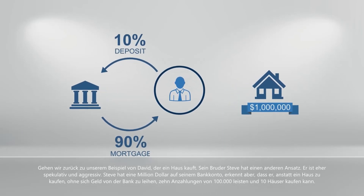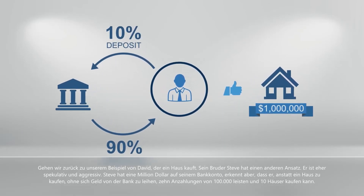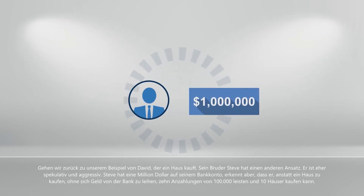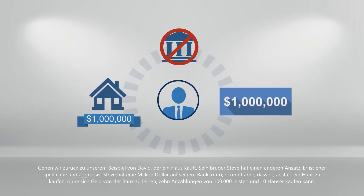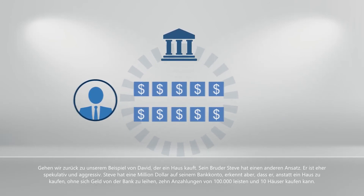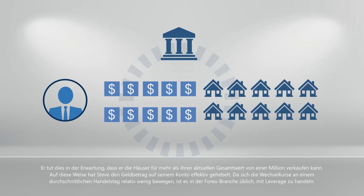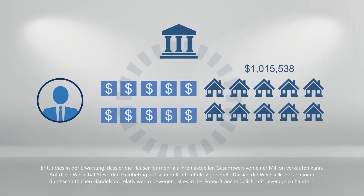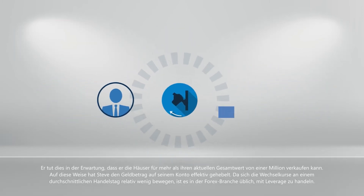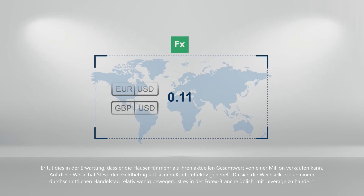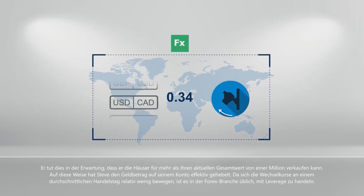Let's go back to our example of David buying a house. His brother Steve has a different approach — he's more speculative and aggressive. Steve has a million dollars in his bank account, but realises that instead of buying one house without borrowing any money from the bank, he can make 10 down payments of 100,000 and buy 10 houses. He does so with the expectation that he can sell the houses for more than their total current value of a million. This way Steve has effectively leveraged the amount of money in his account.